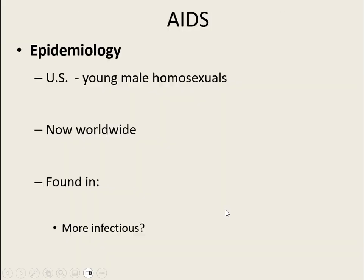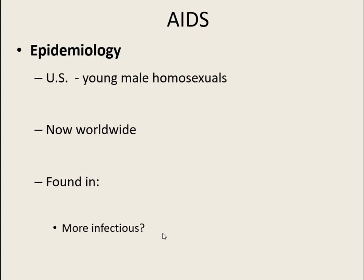Regarding epidemiology: in the US, the predominant transmission group is young male homosexuals. This virus wasn't really predominant until the 1960s–80s, and truly it is worldwide — every continent and country has HIV. The fluids it's found in most infectiously are semen and blood, because the virus is so concentrated there. Anyone sharing needles is another major group due to the high concentration in blood.